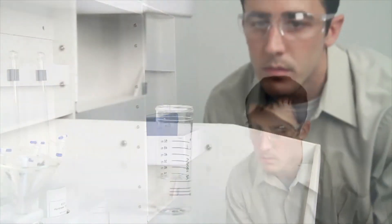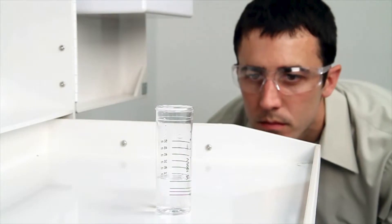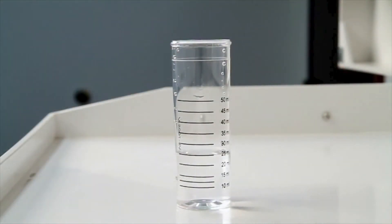When performing a drop count titration, a white background can provide contrast to better see the color changes. A cabinet tray or a white paper towel can provide that contrast.